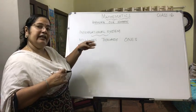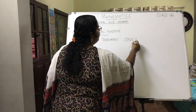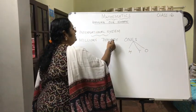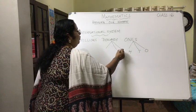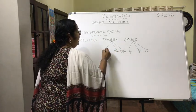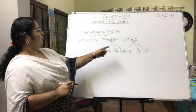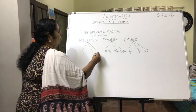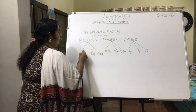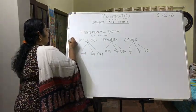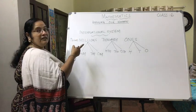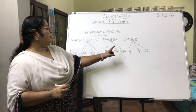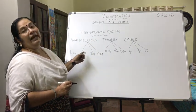Each of these periods is divided into three places each. The ones period is divided into ones, tens, and hundreds as usual. The thousands period is divided into: one thousand, ten thousand, and hundred thousand. The millions period is similarly divided into: one million, ten million, and hundred million. So those are the three periods and nine places.